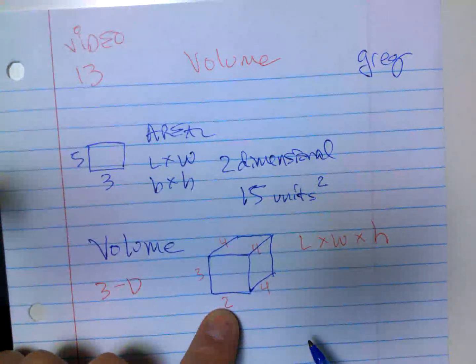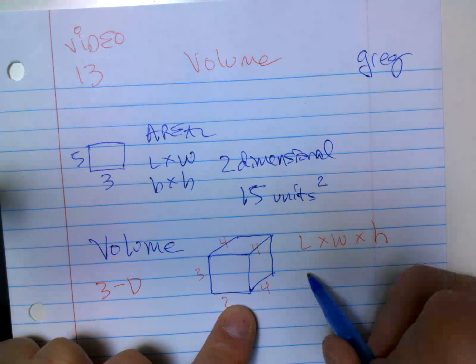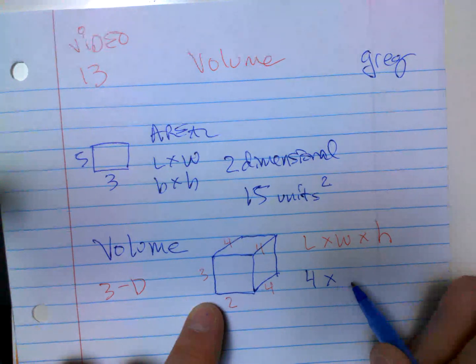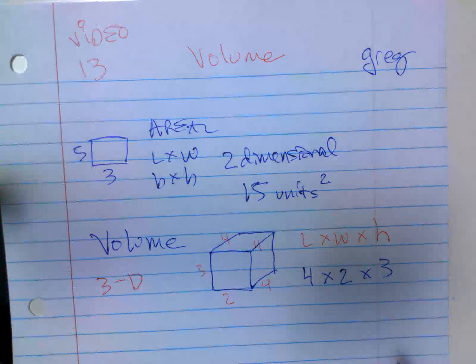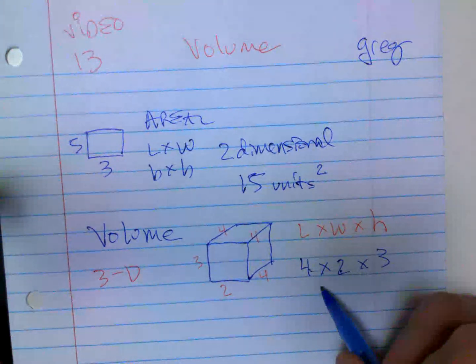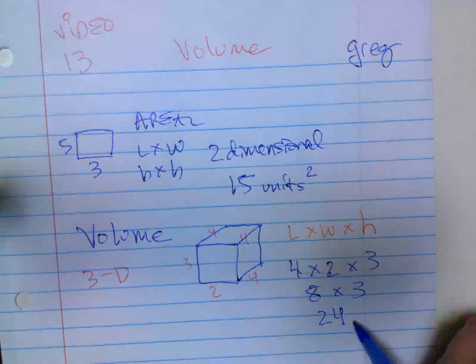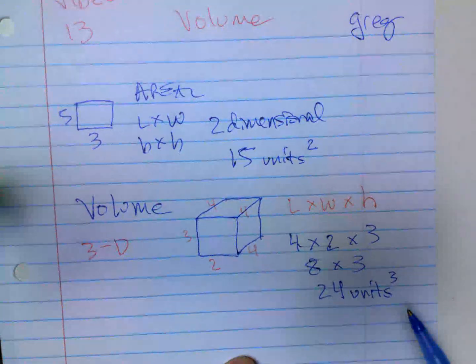So let's say if we said the length is four, the width going side to side is two, and the height is three. So two times four is eight, times three is 24. So it would be 24 units to the third power if you have a choice.